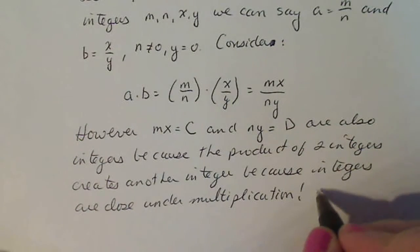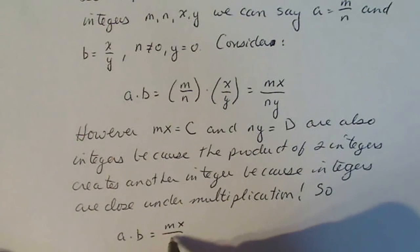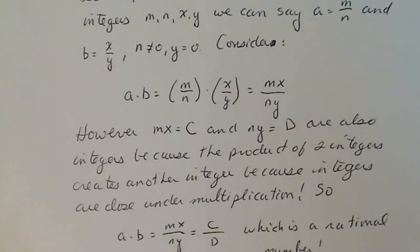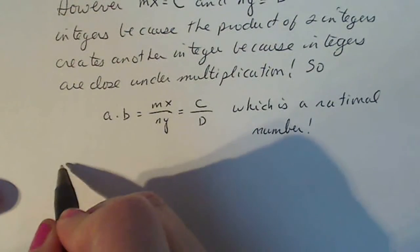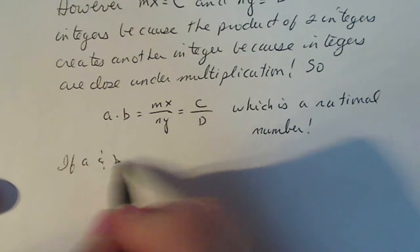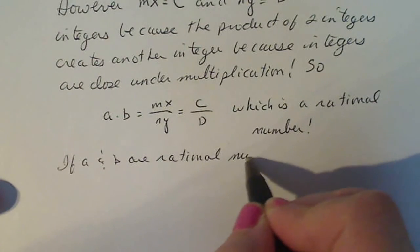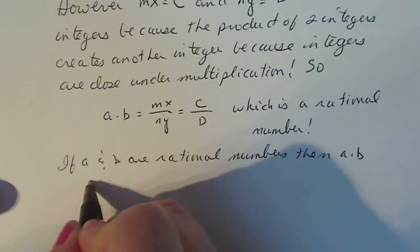So at this point, I can say A times B equaling MX over NY equals C over D, which is a rational number. That's kind of what I wanted to show. So now I make my conclusion. If A and B are rational numbers, then A times B is also rational.